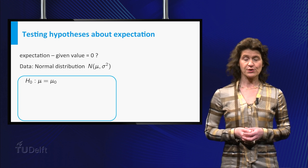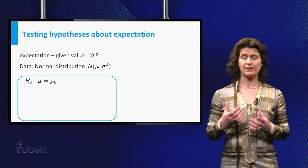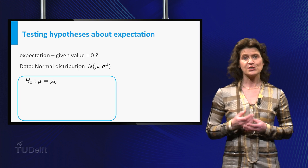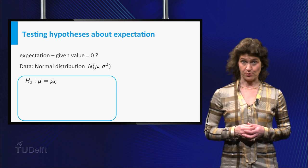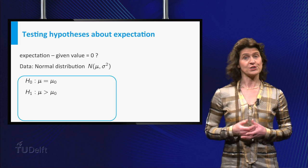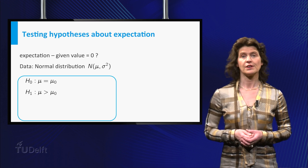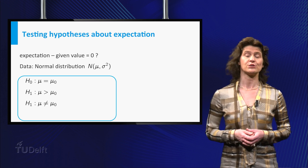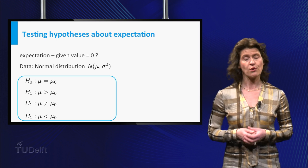You test the null hypothesis mu is equal to some given mu 0 against one of the following alternative hypotheses: mu is greater than mu 0, mu is not equal to mu 0, or mu is smaller than mu 0.